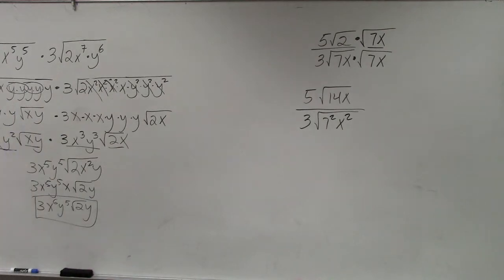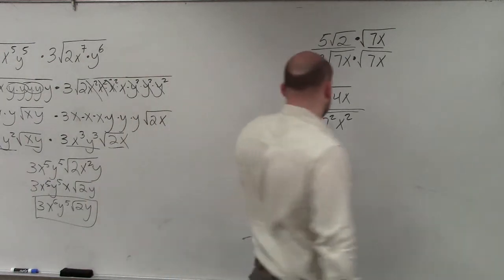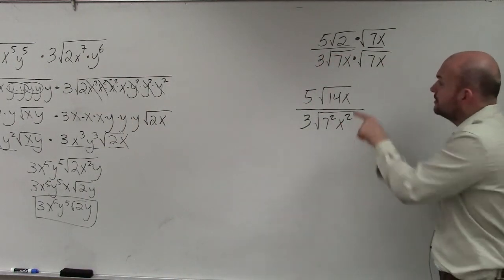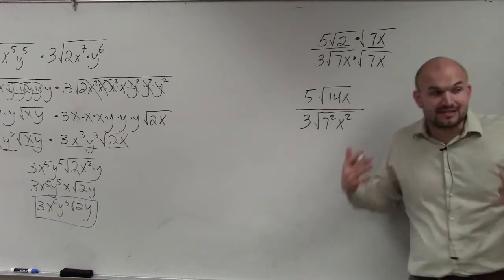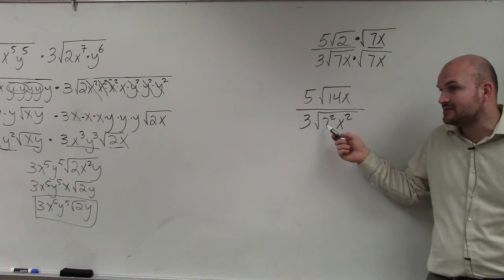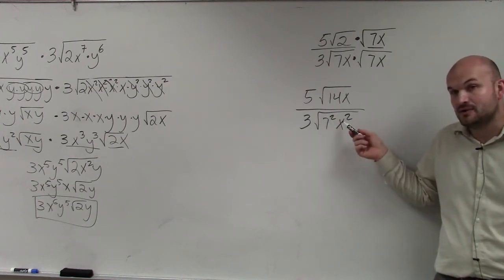And what you guys notice by this means now is, do you guys see I just did 7 times 2, which is 14. And then I had the x. And then the 3, I can't do anything with that. But now, I did 7 times 7, which was 7 squared, which you could say 49. And then x times x is x squared. But what's nice about it, I write it in this format, is do we know what the square root of 7 times 7 is? 7. Square root of x squared? X.